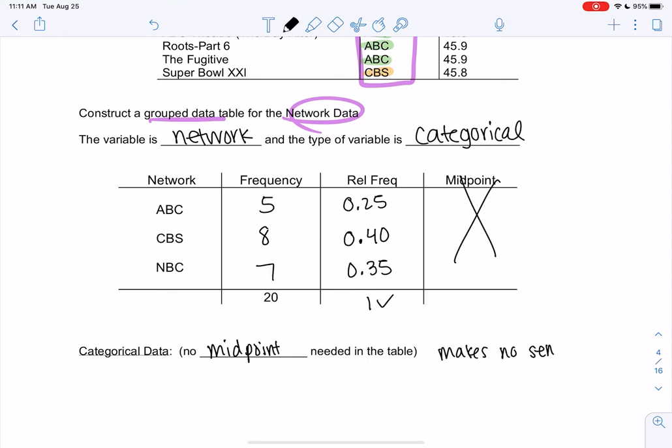And so that's what group data tables are. And so we've seen it for different types of data. And they're kind of the same, with a few small differences depending on the type of data. So it's important to identify what type you have before you start the table. But otherwise, overall, it's about the same.